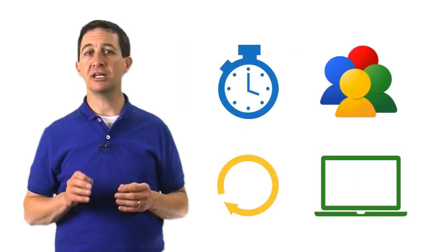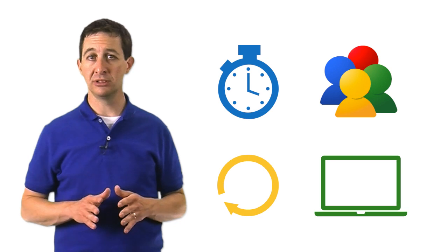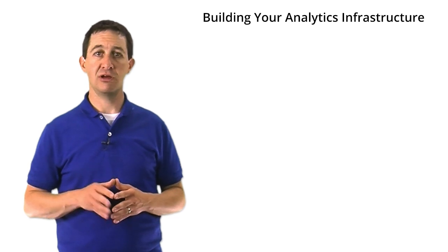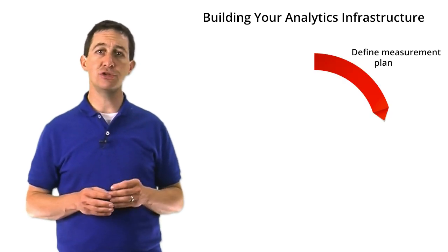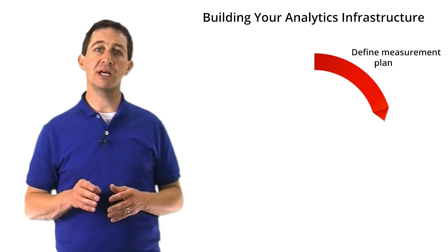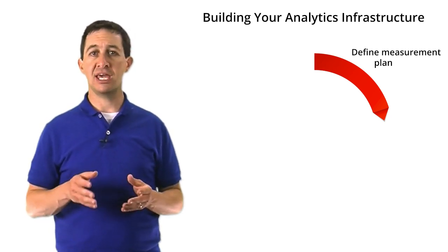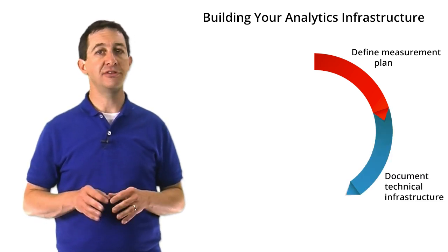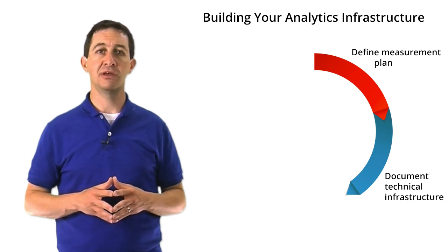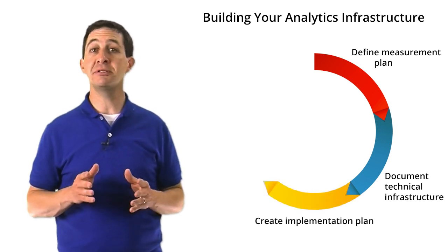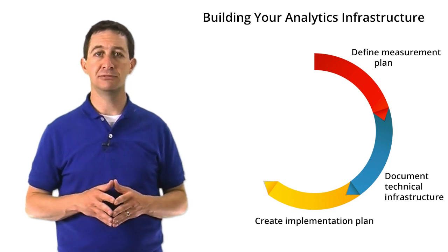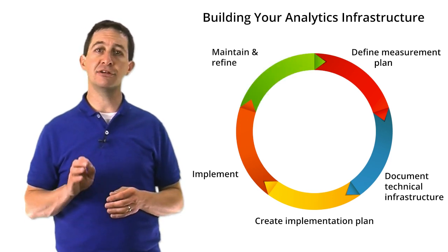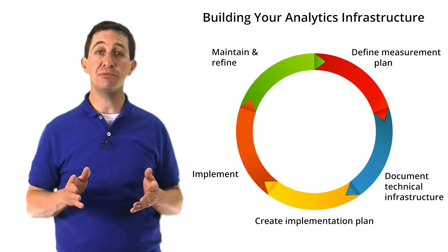In summary, creating a good measurement plan requires you to organize people, process, tools, and technologies. Planning has five main stages. First, define your measurement plan — make sure you involve your business leaders and marketing team, who will identify which objectives, KPIs, segments, and targets should be measured. Next, document your technical environments — this is where you'll want to get your IT team involved. Then, translate your measurement plan into an implementation plan based on your technical environment. Only once the plan is ready, move on to implement analytics. Finally, refine your implementation over time to keep your data current and useful.